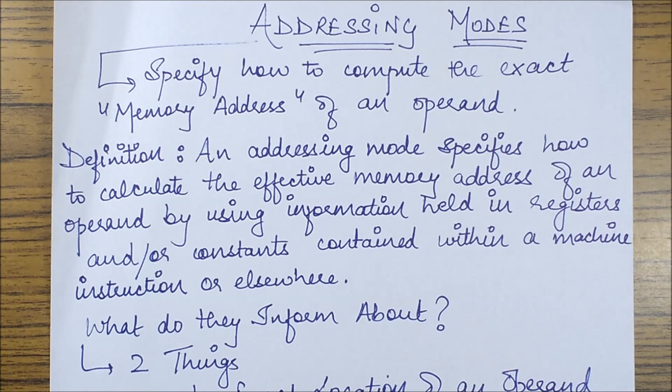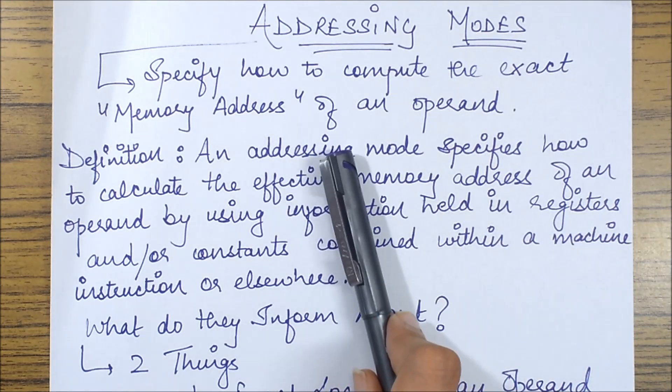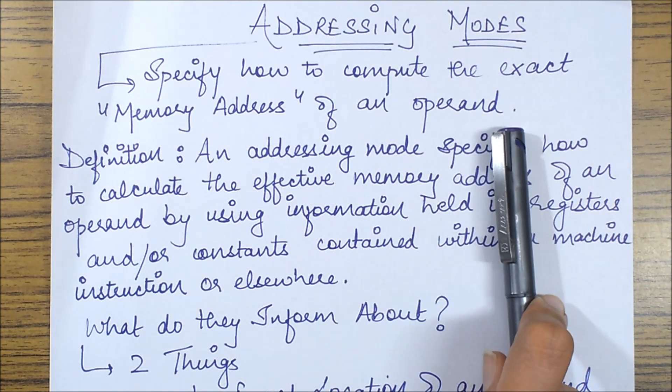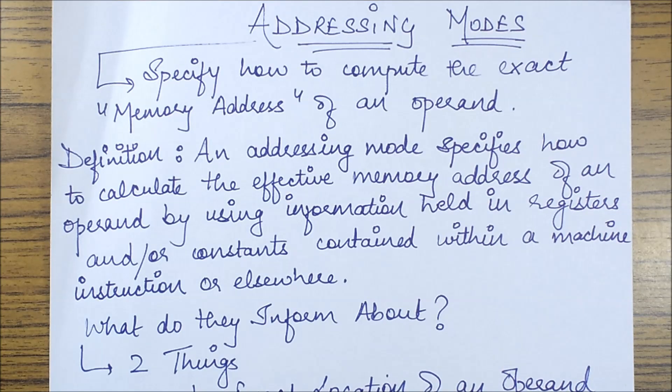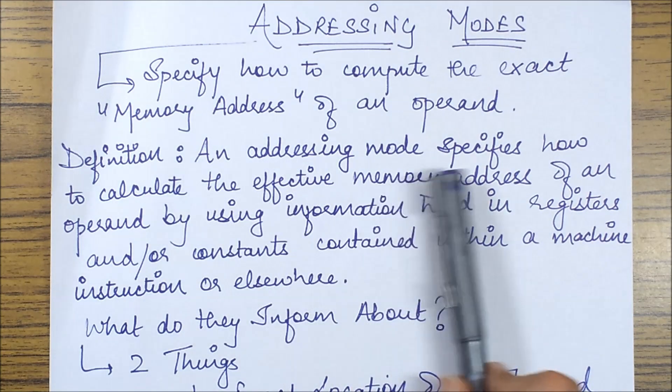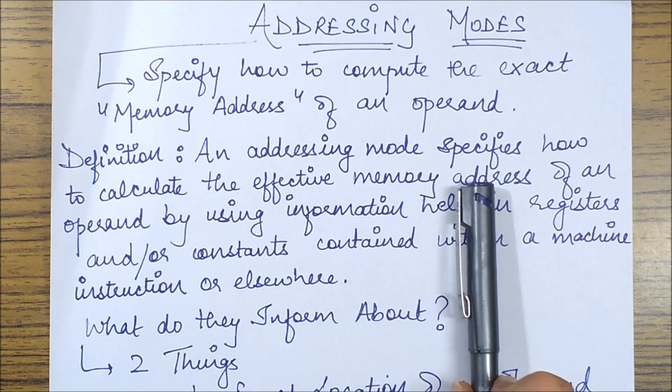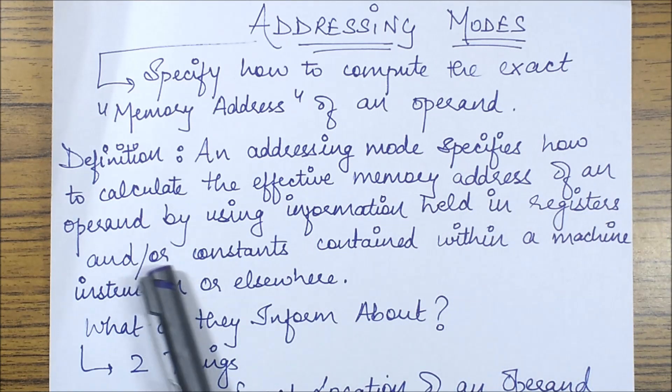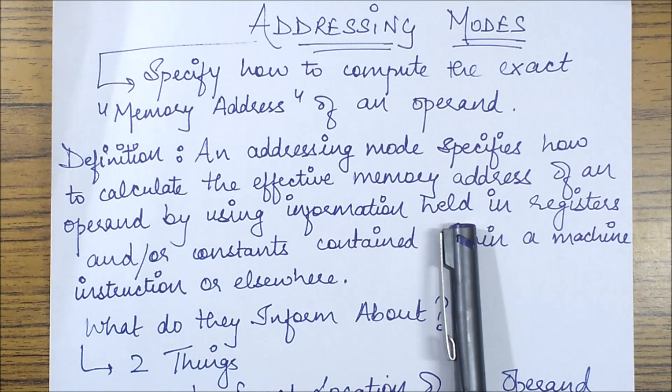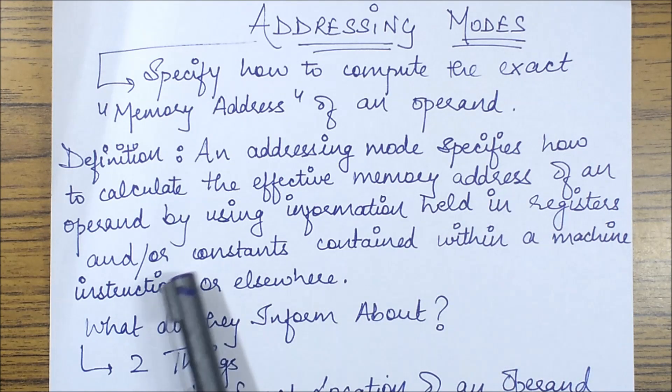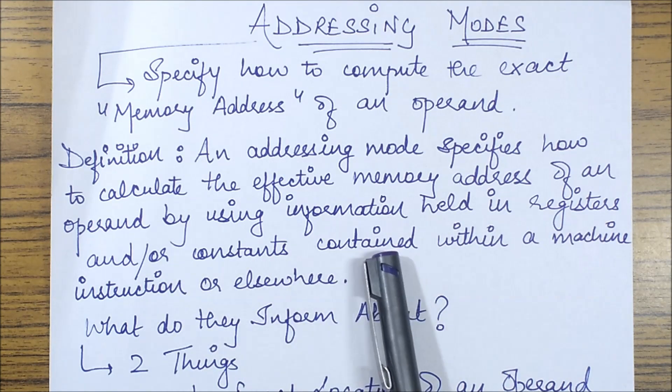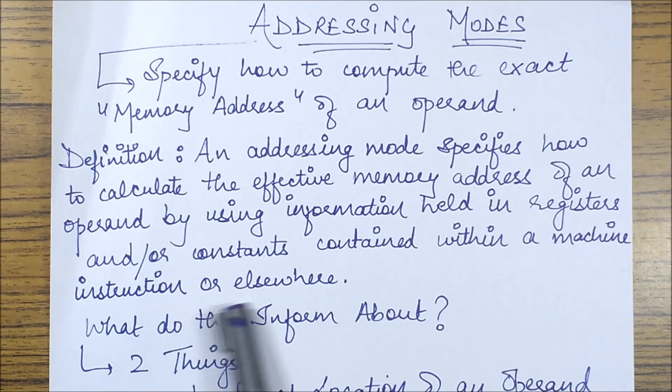Addressing modes specify how to compute the exact memory address of an operand. The basic definition from Wikipedia states that an addressing mode specifies how to calculate the effective memory address of an operand by using information held in registers and/or constants contained within a memory instruction or elsewhere.